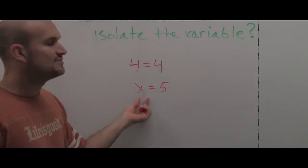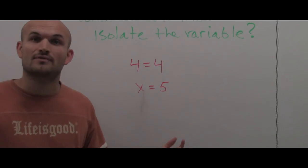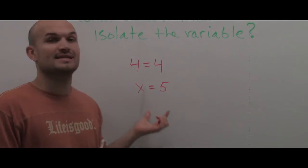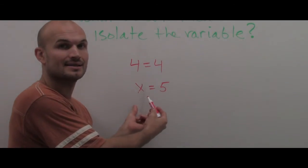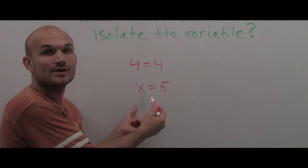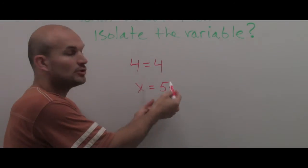And what you notice is this variable is by itself. So that's what we're talking about isolating the variable. Because when you have the variable isolated like this, we now know what the value is. We know the value of this variable is 5.